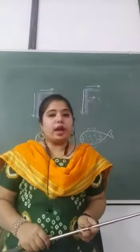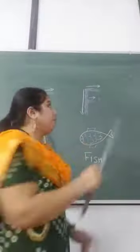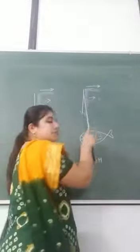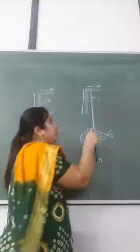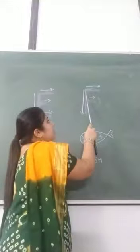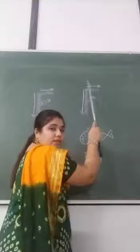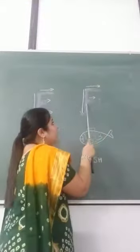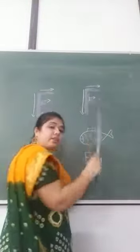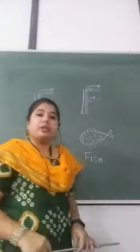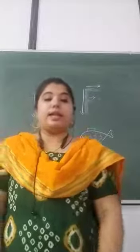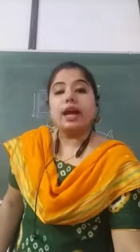And how do we write the letter F? A standing line, a sleeping line at the top, and a sleeping line in the middle — that makes the letter F.